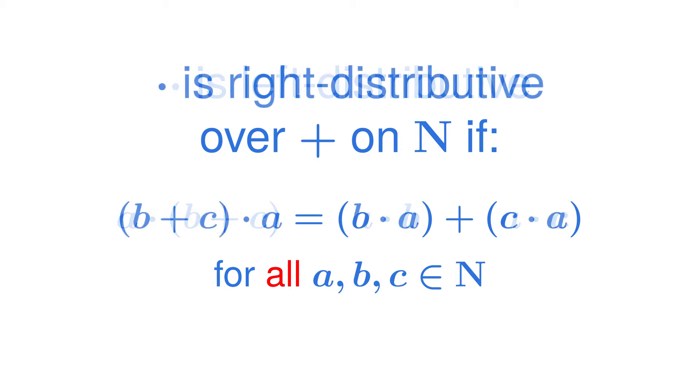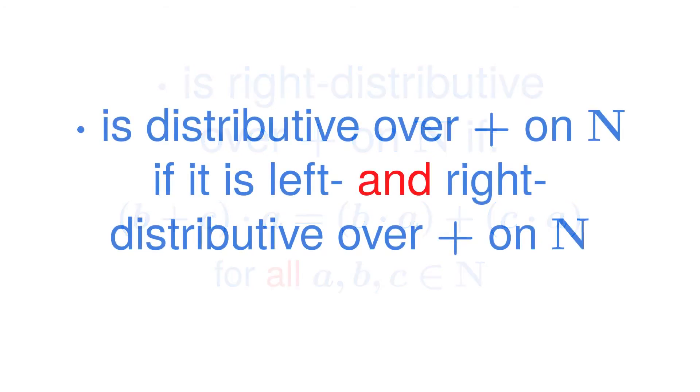If the same is true when we multiply from the other side, namely that b plus c times a is equal to b times a plus c times a for all natural numbers a, b and c, then we say that multiplication is right distributive over addition. Multiplication is distributive over addition if it is both left and right distributive over addition.